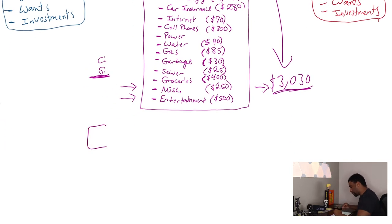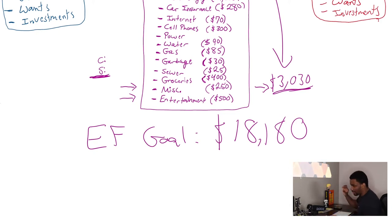All right, so emergency fund goal is $18,180, right? So that's where we're at. So that's our emergency fund goal.